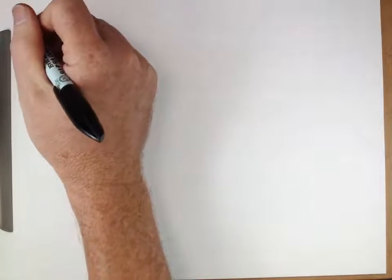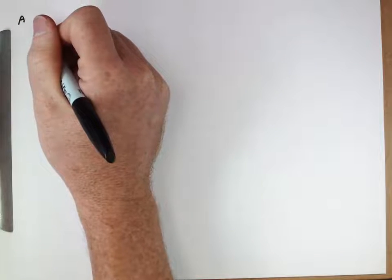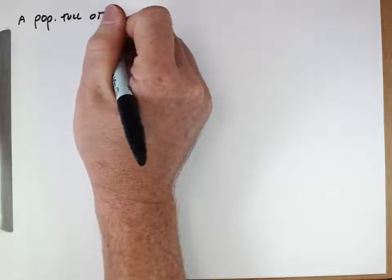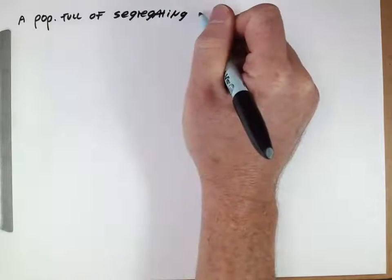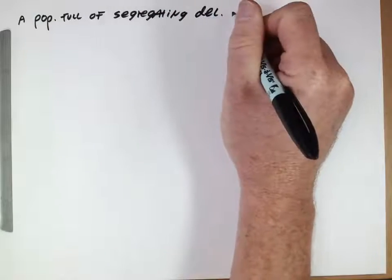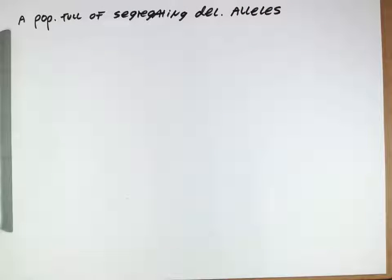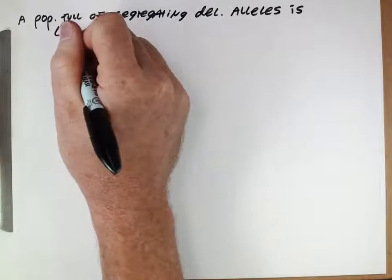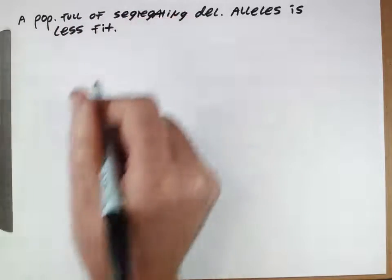If we think about this mutation selection balance that we've been considering, those deleterious alleles are in a population. A population full of segregating deleterious alleles, where a bunch of individuals have some of these deleterious alleles, even if they're recessive, will be producing homozygous offspring that express these traits. A population with a whole bunch of these segregating deleterious alleles is actually less fit on average than a population that didn't.